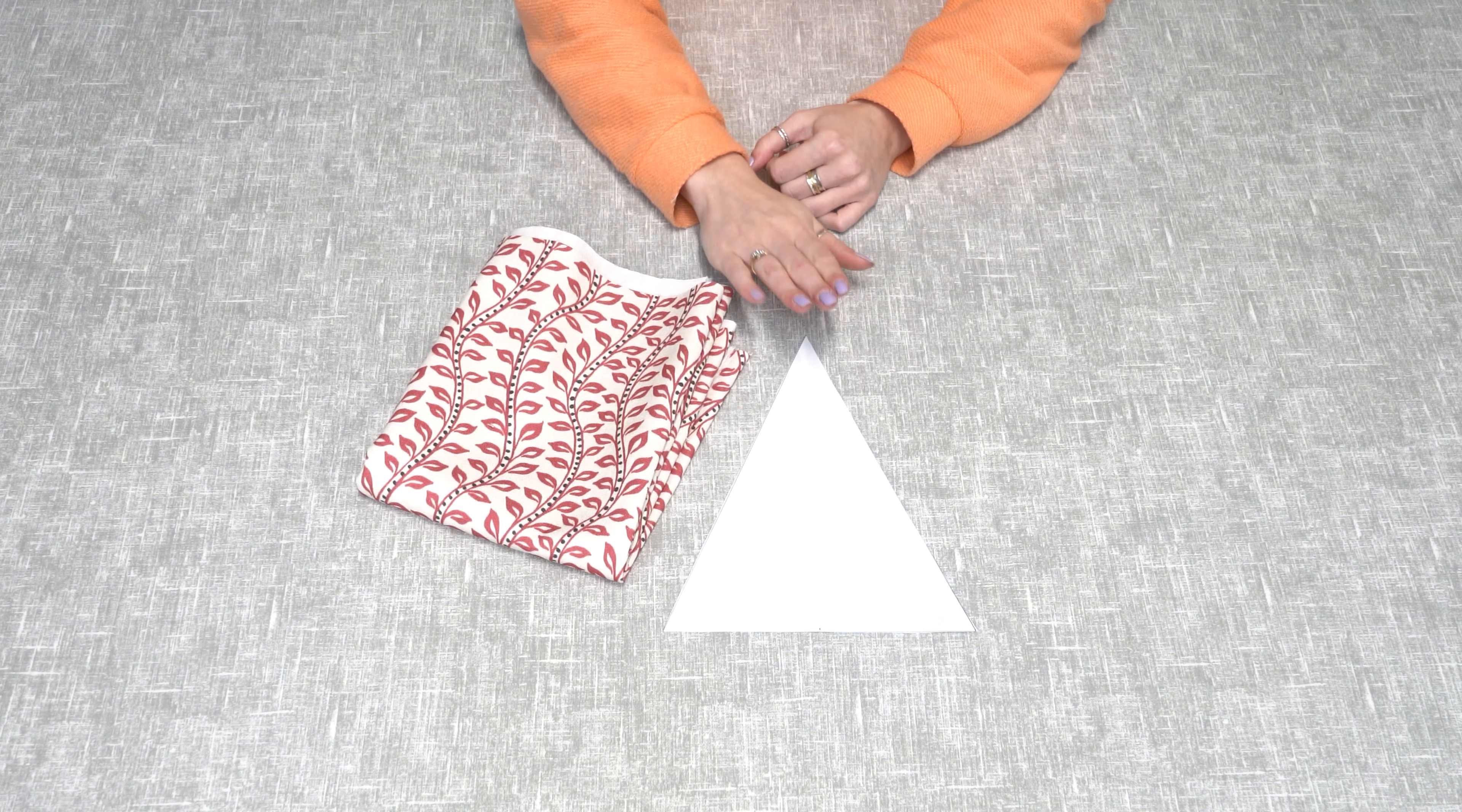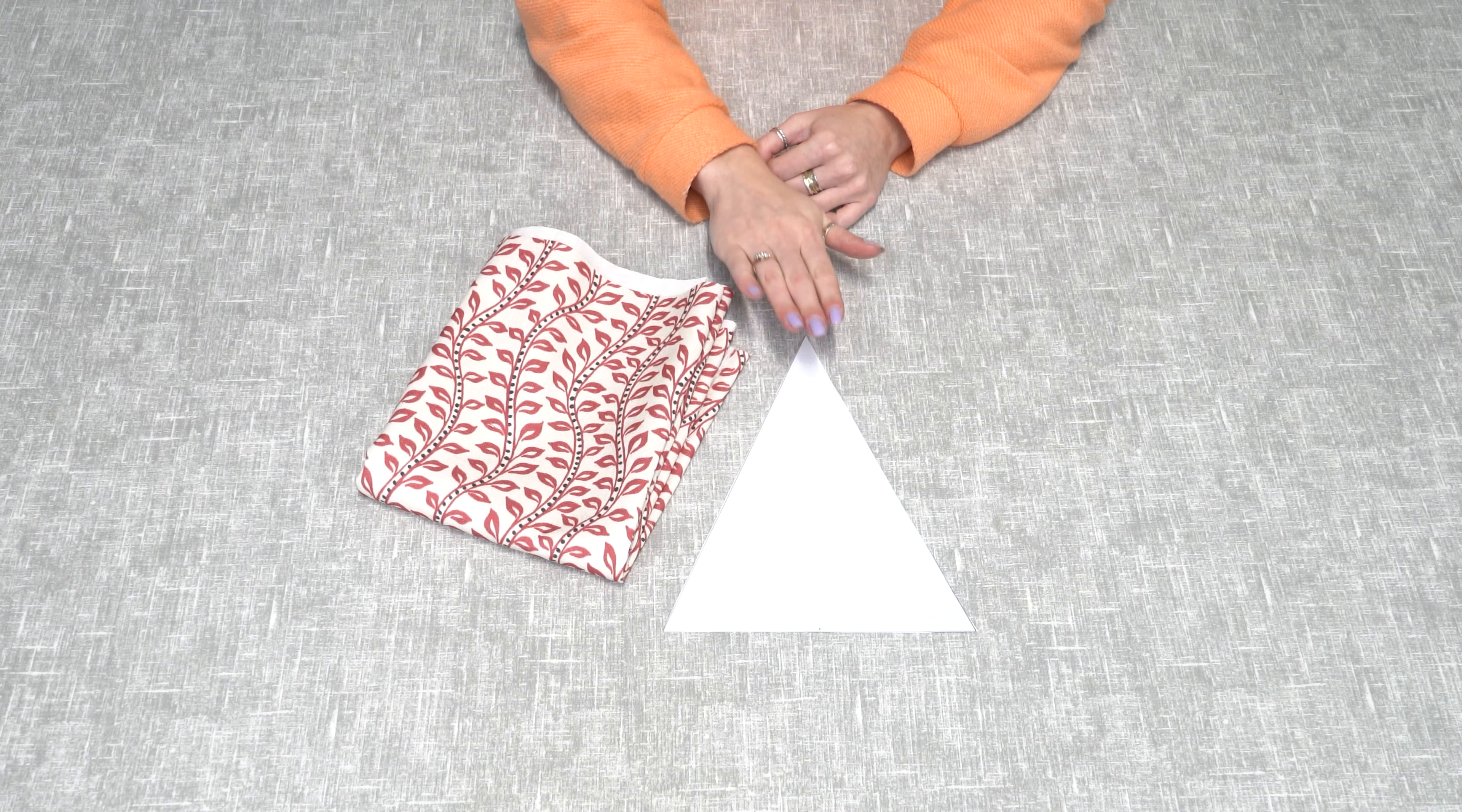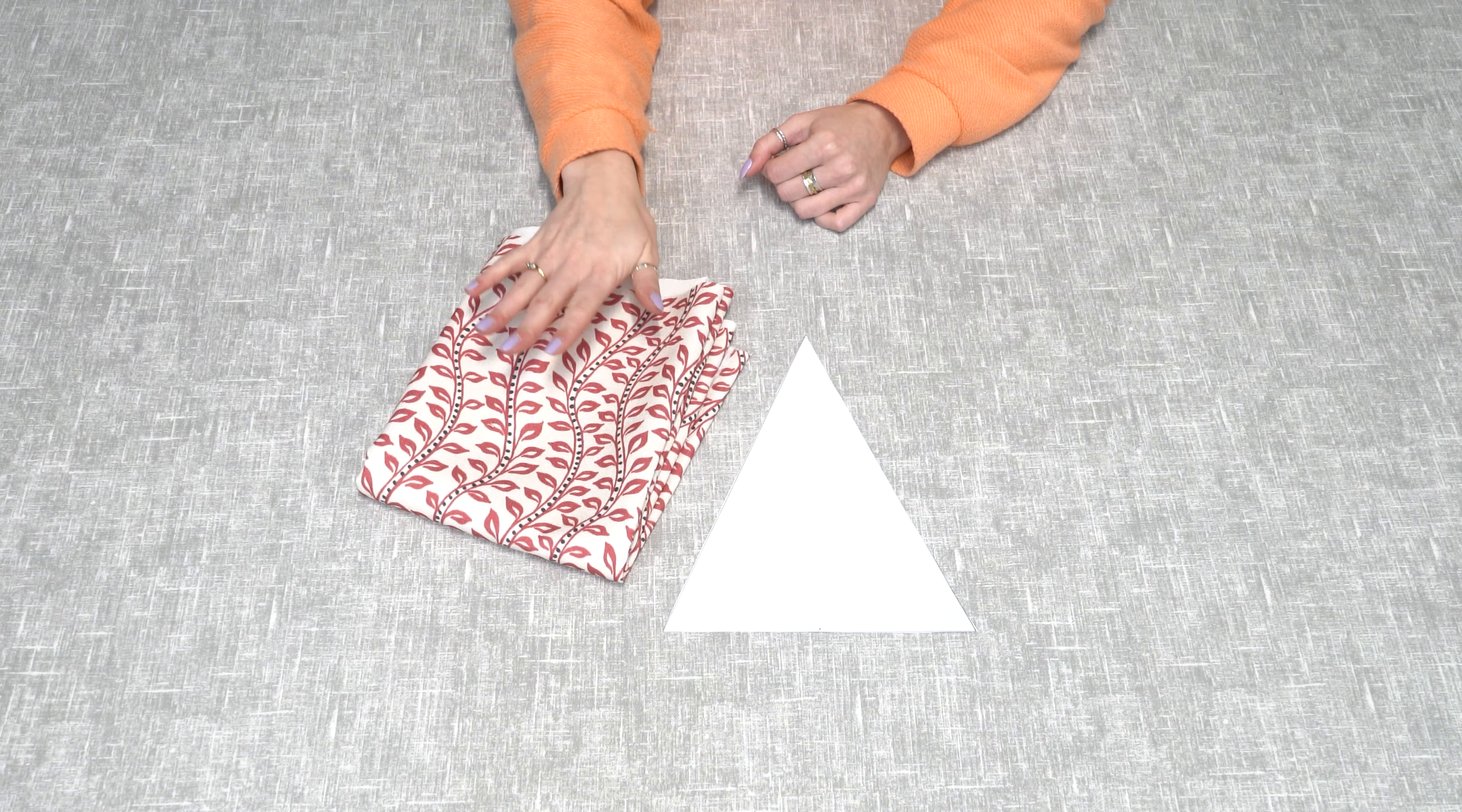So now you can use your template to cut out four triangles in each of your chosen fabrics, and this is going to create 10 triangles altogether. Make sure the point of the triangle is lined up with something straight on the pattern, and you can draw around the stencil with your fabric marker or chalk.